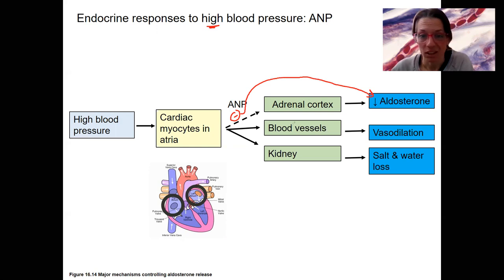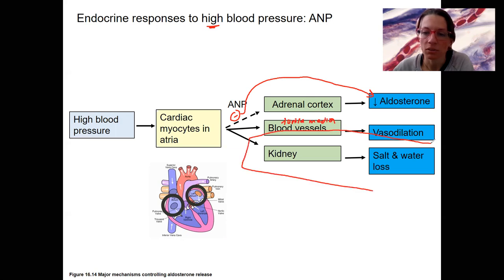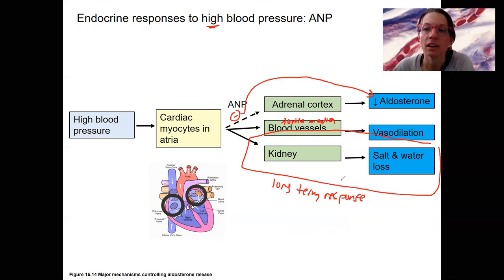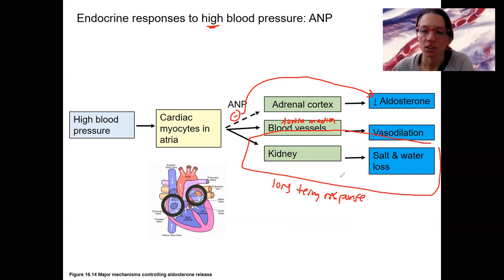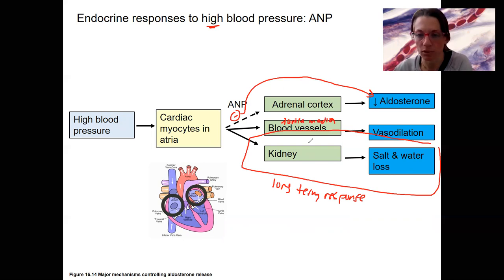The long-term response via the kidney altering fluid volume is something I won't ask you about in this context. ANP's short-term effects are vasodilation and aldosterone inhibition. The idea that the kidney alters fluid volume is a long-term response we'll discuss next with other hormones. Salt and water loss is the long-term response to high blood pressure.